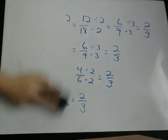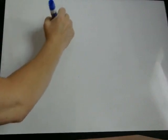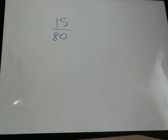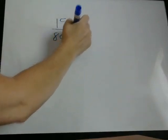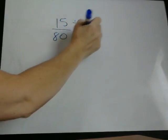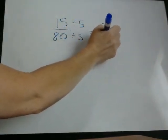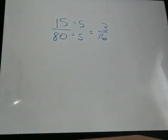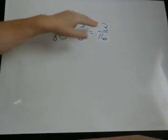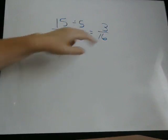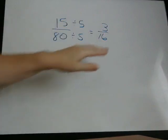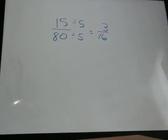We're going to do one more example. 15 over 80. You should recognize that both of these numbers can be divided by 5. And we end up with 3 16ths. Now, there's no number other than 1 that can go evenly into both 3 and 16. So this is our answer in lowest terms.